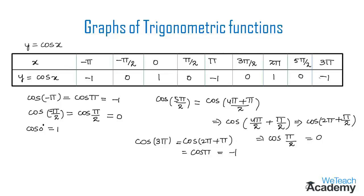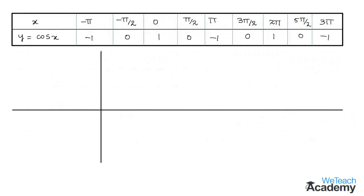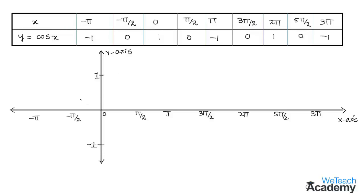Now let us take a suitable scale and plot these points on the coordinate plane. We draw an x-axis and a y-axis, plotting 1 on the positive y-axis and minus 1 on the negative y-axis. The point for x equal to minus pi gives y equal to minus 1, and for x equal to minus pi by 2 gives y equal to 0, which lies on the x-axis.